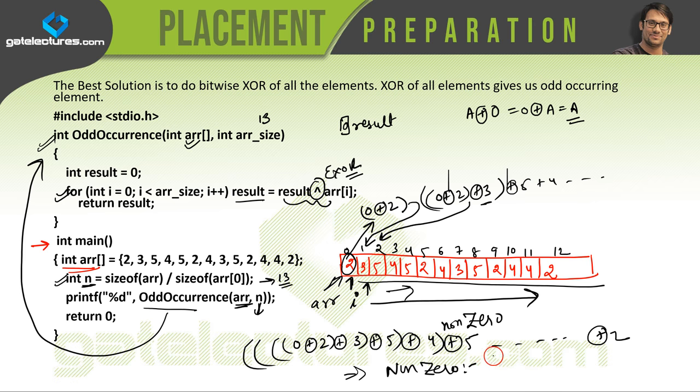By the end if we get a result which is a non-zero result, that means there exists a number which is occurring odd number of times. And if the result is 0, that means there does not exist a number which is occurring odd number of times. Whatever the result will be, we are sending it to print here. So this will print the number which is occurring odd number of times, otherwise it will print 0.